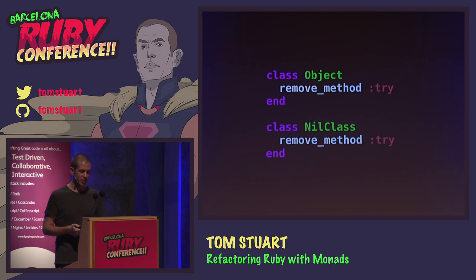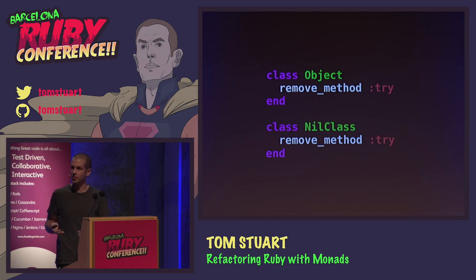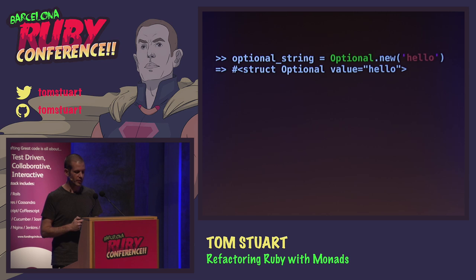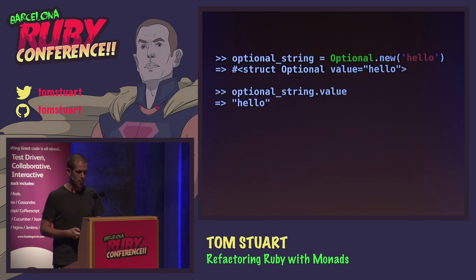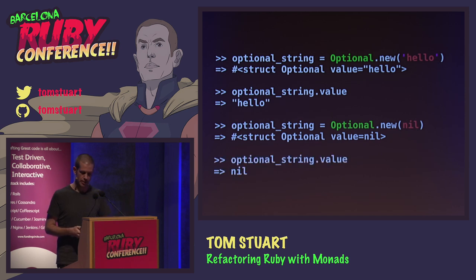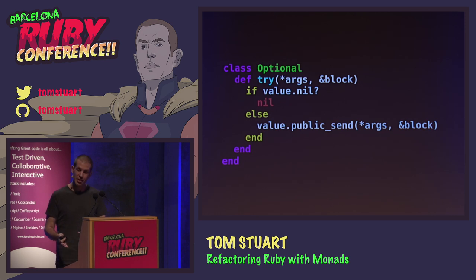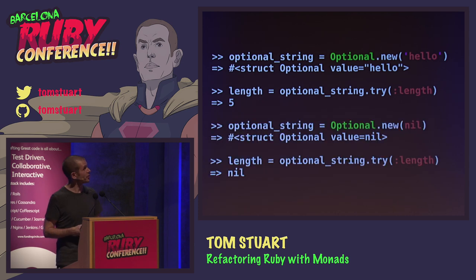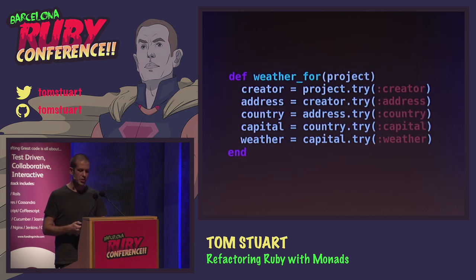Monkey patching definitely has its place, but monkey patching every single object in the system isn't great — it's a code smell. The good object-oriented solution is to use decoration, where you non-invasively add functionality to one object by wrapping it inside another. So let's make a decorator class called Optional whose instances have a single attribute called value. Instead of putting the try method on Object, let's put it on Optional. If the value attribute is nil it just returns nil; otherwise it sends the appropriate message to the underlying object. So we call try on the decorator and it delegates to the underlying object as long as it's not nil.